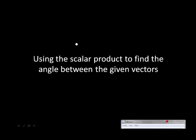Using the scalar product to find the angle between two given vectors. Let's suppose you're given two vectors, a with components (-2, 4) and b with components (7, 6), and I asked you to find the angle that is formed between these two vectors.